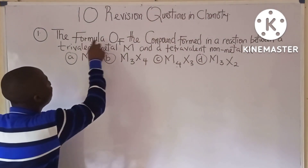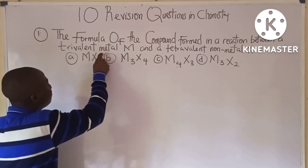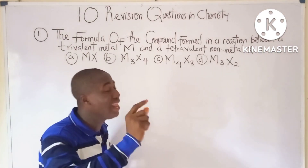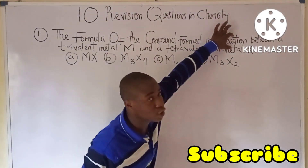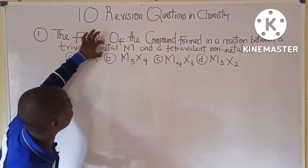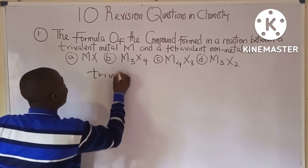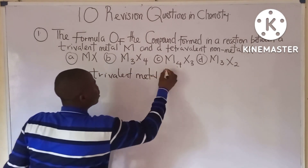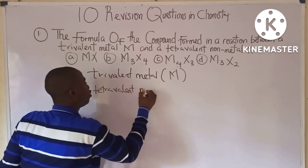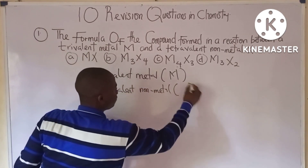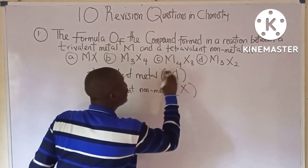Question one says: the formula of the compound formed in a reaction between a trivalent metal M and a tetravalent non-metal X. It is a reaction formed between two types of elements — a trivalent metal M and a tetravalent non-metal X.